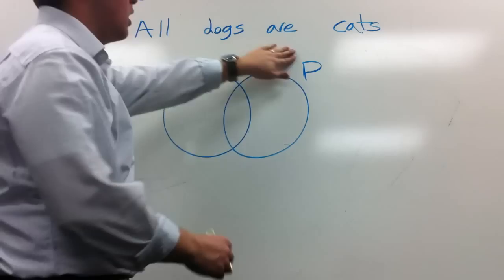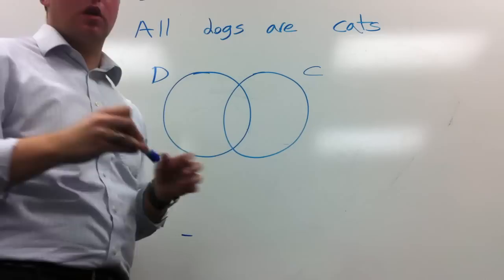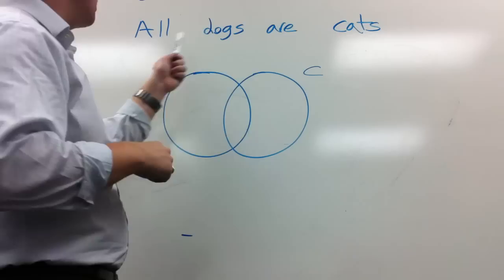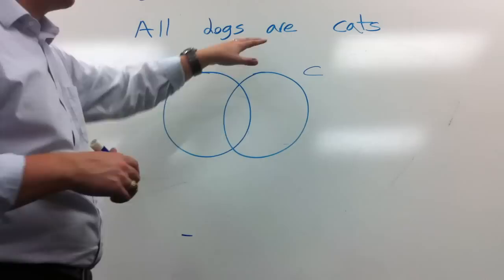So in this case, all dogs are cats. This will be our A statement. So we'll put dogs over here, cats over here. For A statements and E statements, universal statements, we shade out. So all dogs are cats, so we're going to shade with this. That's how we graph universals. If we want to say that all dogs are cats, we're trying to say that basically if you're a dog, if you're in the dog circle,